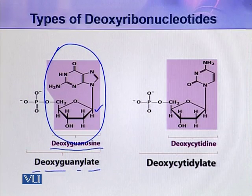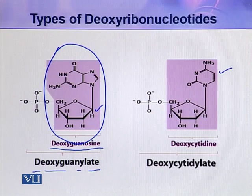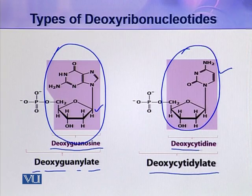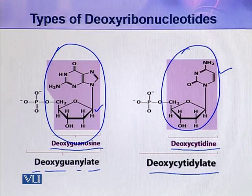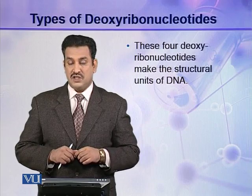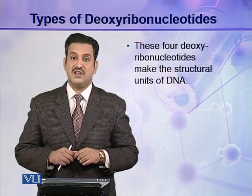In the fourth type of deoxyribonucleotide, if the nitrogenous base is cytosine, the whole nucleotide is called deoxycytidylate. So these are the four types of deoxyribonucleotides present in a DNA molecule, and these four deoxyribonucleotides make the structural units of a DNA molecule.